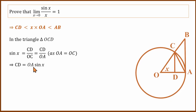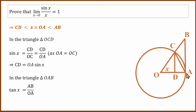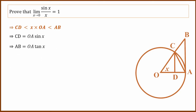In the right angle triangle OAB, tan x is opposite over adjacent. Opposite is AB, adjacent is OA. So tan x equals AB divided by OA, meaning AB equals OA times tan x. Therefore: CD = OA·sin x and AB = OA·tan x.